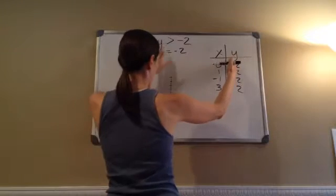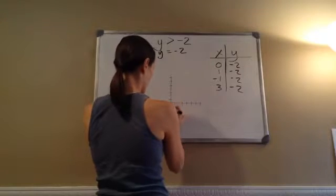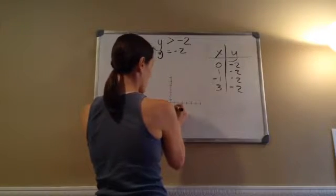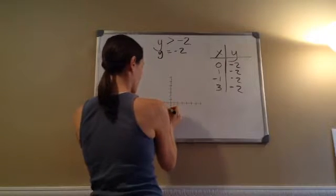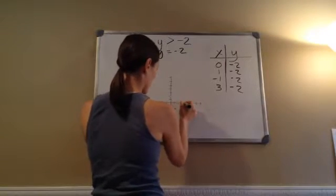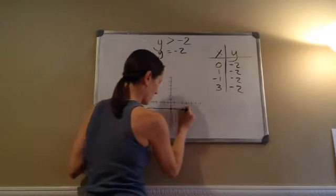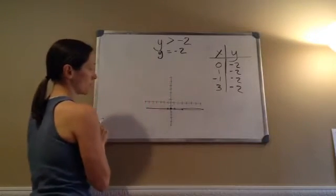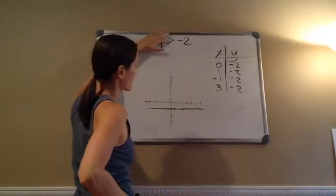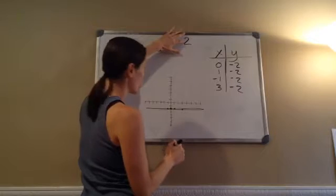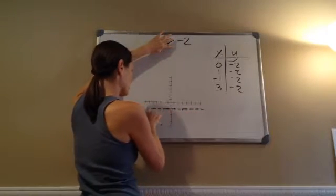I'm going to keep y as negative 2 for right now. So: (0, -2), (1, -2), (-1, -2), (3, -2). Hopefully you notice that we've got this line right here. Now I'm going to go back up — the graphed part is greater than negative 2. Is it equal to? No, it's just greater than. So I'm going to put a dotted line.